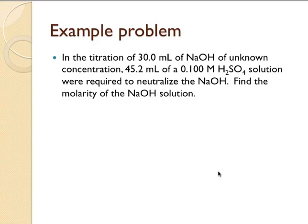All right, so let's look at the titration of 30 milliliters of a sodium hydroxide solution, unknown concentration, and I'm going to use sulfuric acid solution, 0.1 molar, to neutralize it. In the experiment, I found that it was 45.2 milliliters of that sulfuric acid solution to neutralize the sodium hydroxide. Find the molarity of the sodium hydroxide solution. Well, first thing to do is to write the equation.